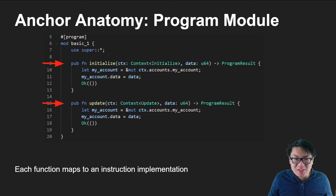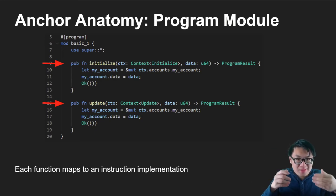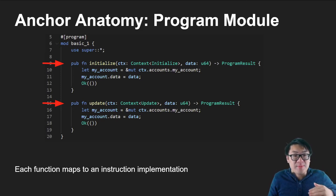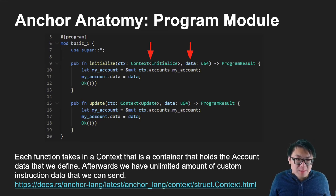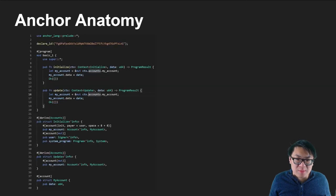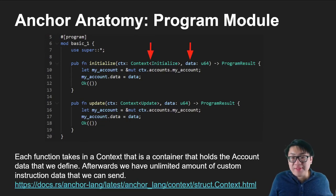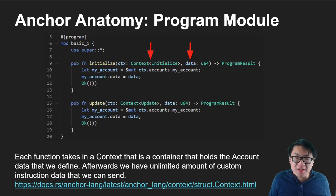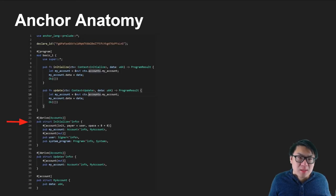Each of the functions inside the module is essentially an instruction. Instructions are individual transactions you can make to the contract to do something with your account. Accounts are just state data stored on the Solana network. In previous videos, we had one massive helper function where we extracted data and handled instructions independently. With Anchor, we just define each function per instruction. The first parameter we get is the context — a container that holds the account data we defined. After the context, we can take in an unlimited number of custom instruction data variables.